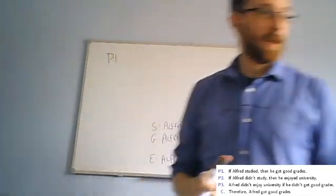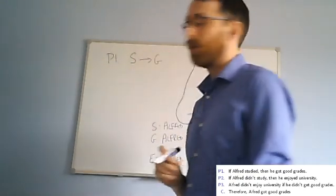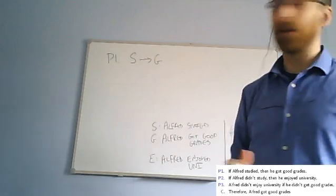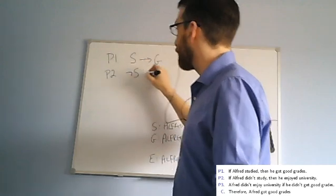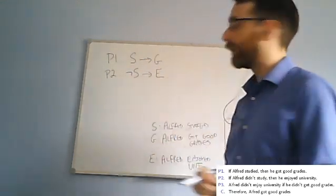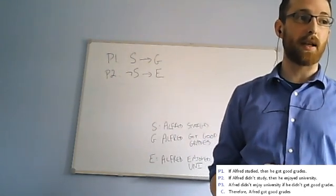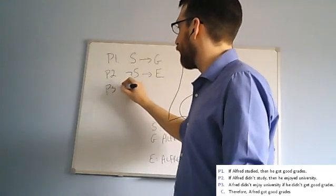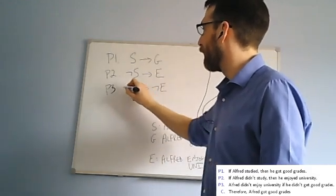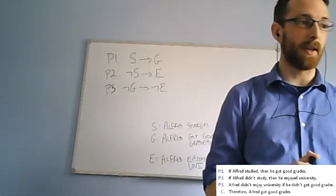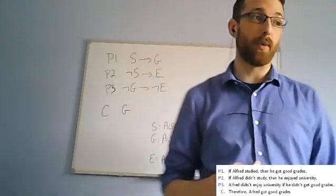Then our argument looks like this when we symbolize it. Premise one, if Alfred studied, then he got good grades, that would be S arrow G. Premise two, if he didn't study, then he enjoyed university. So if he did not study, then he enjoyed university. Premise three, Alfred didn't enjoy university if he didn't get good grades. So he didn't enjoy university if he didn't get good grades. Therefore conclusion, Alfred got good grades. This is the argument we're looking at.